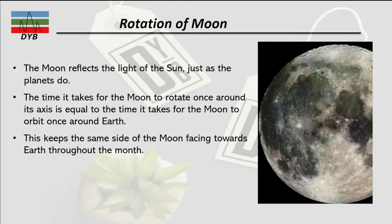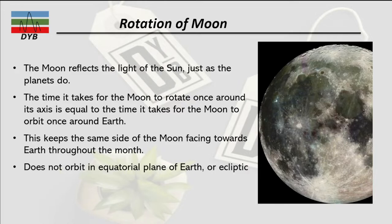This keeps the same side of the moon facing toward the earth throughout the time the moon has been formed. The moon does not orbit in the equatorial plane of the earth or the ecliptic, and the earth's moon has high angular momentum between each other.